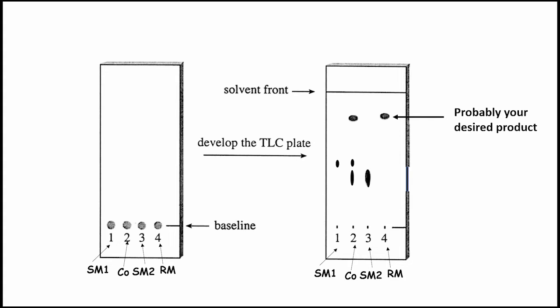Suppose we are putting this reaction. In this example, there are two starting materials SM1 and SM2 and the product is forming after 16 hours. Now, in TLC, you will put one spot for SM1, one for SM2, one for reaction mixture after 16 hours and one for Co which contains all SM1, SM2 and reaction mixtures.